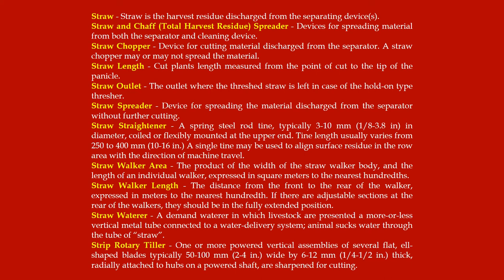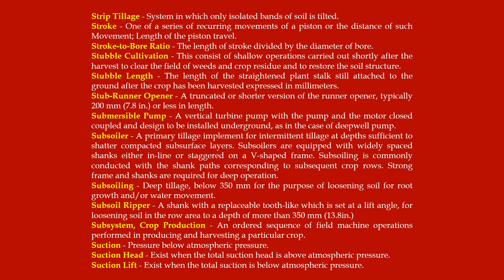Strip rotary tiller blades are 6 to 12 mm (1/4 to 1/2 inch) thick, radially attached to hubs on a powered shaft, and sharpened for cutting. Strip tillage: a system in which only isolated bands of soil are tilled.